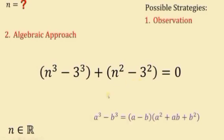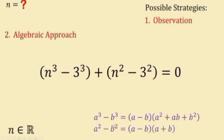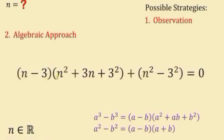We can now use two factoring identities. The difference of two cubes: a³ − b³ = (a − b)(a² + ab + b²). The difference of two squares: a² − b² = (a − b)(a + b). Applying these, n³ − 3³ factors as (n − 3)(n² + 3n + 9), and n² − 3² factors as (n − 3)(n + 3).